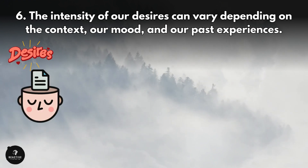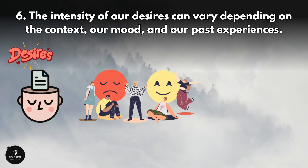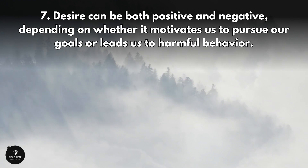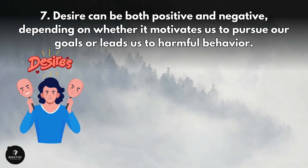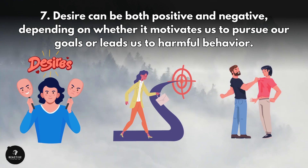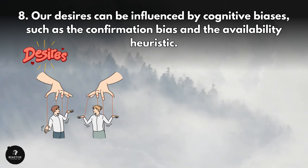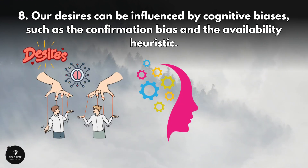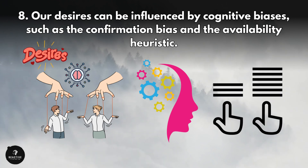The intensity of our desires can vary depending on the context, our mood, and our past experiences. Desire can be both positive and negative, depending on whether it motivates us to pursue our goals or leads us to harmful behavior. Our desires can also be influenced by cognitive biases, such as the confirmation bias and the availability heuristic.